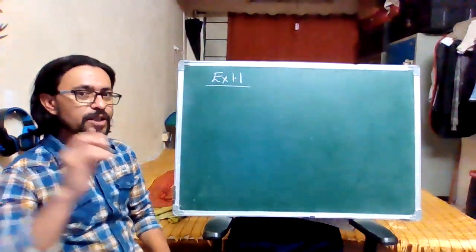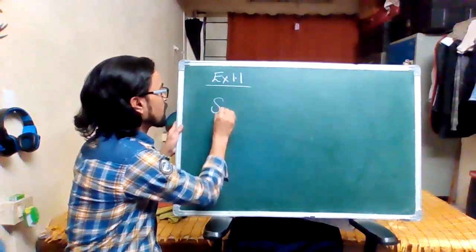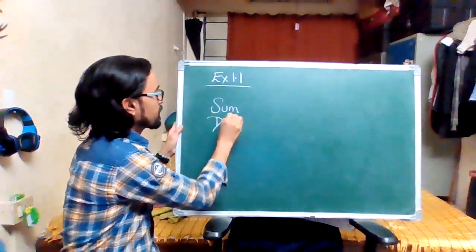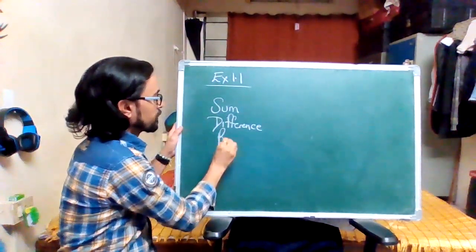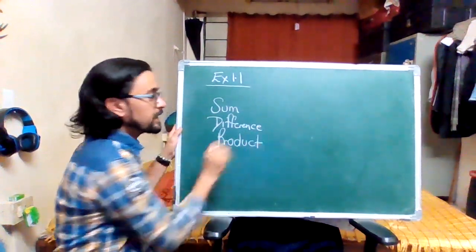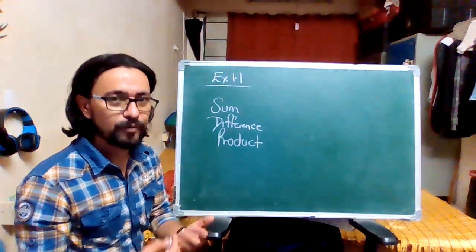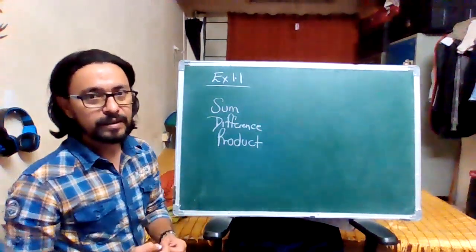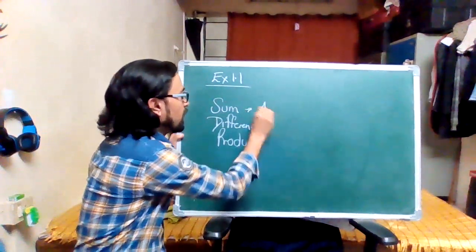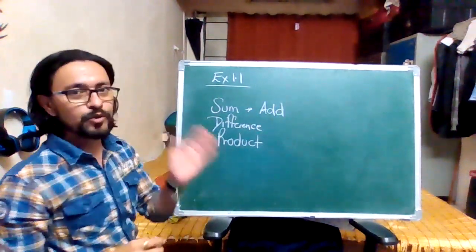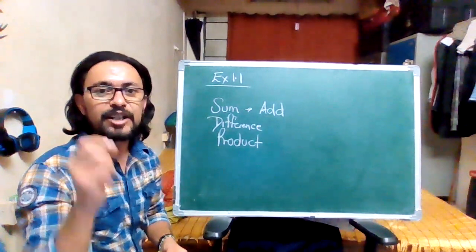There are another few terminologies I'd like to discuss before we go ahead. We come across words like sum, difference, and product. These words in mathematics mean something — they basically tell you what operation has to be performed with the numbers given to you. Sum means you have to add. If I tell you to find the sum of 2 and 5, it would be 2 plus 5 is equal to 7. The word sum tells you that addition has to be done.